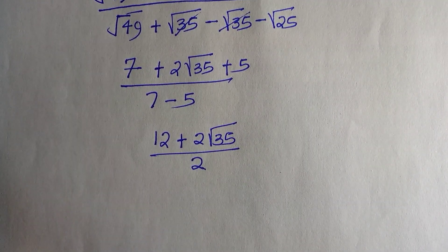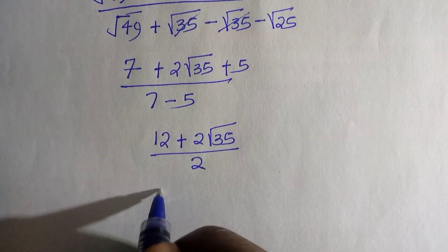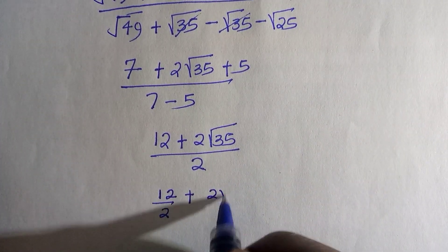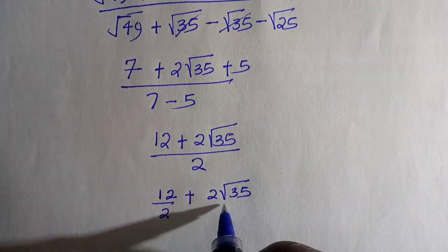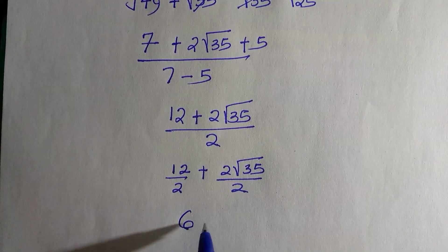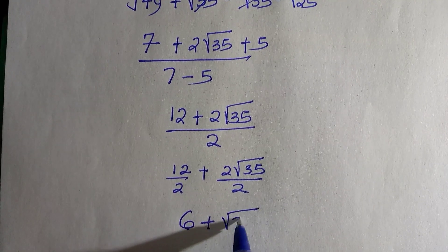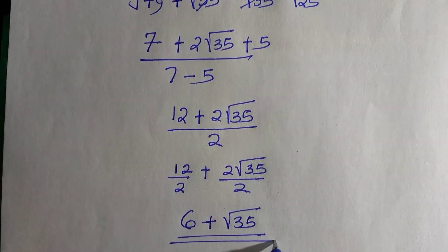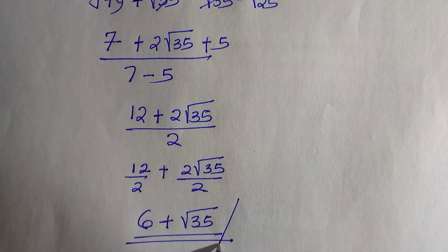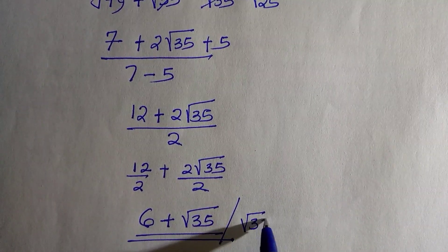We can separate these two since 2 goes into 12 and also into the coefficient outside √35. We have 12 divided by 2 plus 2√35 divided by 2. That gives us 6 + √35, which is the final result.